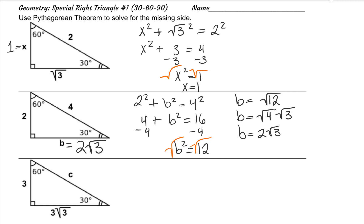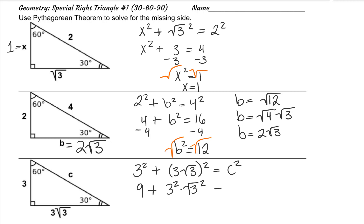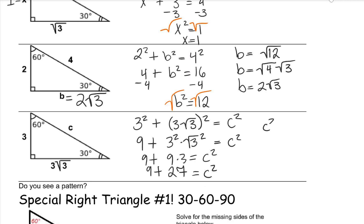Our third one looks like we're solving for the hypotenuse this time. 3 squared plus 3 root 3 squared equals c squared. Remember, this is 3 squared times root 3 squared, so 9 times 3. 9 plus 27 is 36. After square rooting both sides, the length of side c is 6.